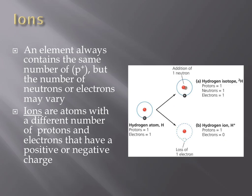Ions are atoms that have an imbalance in the number of protons and the number of electrons that they possess. The picture on the right shows a typical hydrogen atom on the left hand side. It possesses one proton and one electron. If you remove the negatively charged electron, as shown in the bottom right image, it would have one proton and zero electrons, giving it a positive charge. Because it has a charge, it is called an ion.